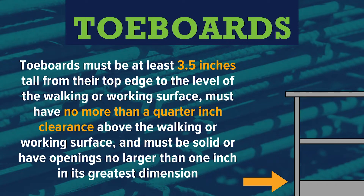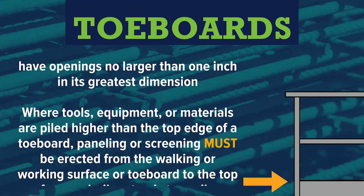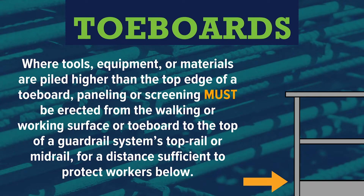Toe boards must be at least three and a half inches tall from their top edge to the level of the walking or working surface, must have no more than a quarter-inch clearance above the walking or working surface, and must be solid or have openings no larger than one inch in their greatest dimension. Where tools, equipment, or materials are piled higher than the top edge of a toe board, paneling or screening must be erected from the walking or working surface or toe board to the top of the guardrail system's top rail or mid-rail, for a distance sufficient to protect workers below.